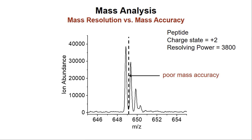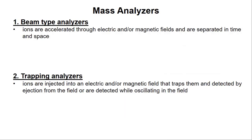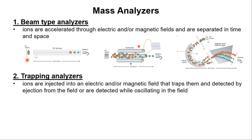Now that we have some terminology out of the way, let's talk about more specific types of mass analyzers. There are two general types: beam-type analyzers and trapping analyzers. Beam-type analyzers are ones in which ions are accelerated through an electric and/or magnetic field and are separated in time and in space. There are three general types of beam-type analyzers: the time-of-flight mass analyzer or TOF, quadrupole mass analyzers, and double-focusing mass analyzers. I'm going to talk more about the TOF and the quadrupole, but not about double-focusing mass analyzers — if I gave this presentation about 30 years ago, those would have been front and center, but not so much anymore.